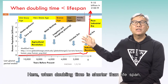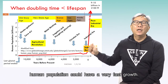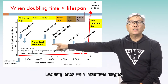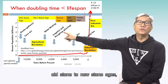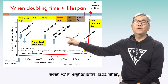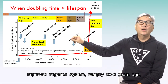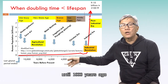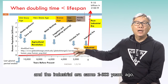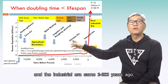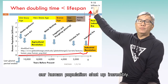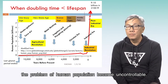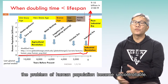When doubling time is shorter than lifespan, human population can grow very fast. Looking back at historical stages — from the old stone to new stone ages, through the agricultural revolution and improved irrigation roughly 5,000 years ago — until the industrial era about 300 years ago, human population shot up incredibly. After the industrial era, the problem of human population became uncontrollable.